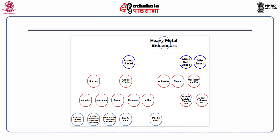Biosensors for heavy metals can be characterized depending upon the biocomponent employed. According to this categorization, we can classify them into three classes: protein based, whole cell based, or DNA based. Protein-based heavy metal biosensors can further be divided into enzyme based, purified protein based, or antibody based. Antibody-based biosensors generally include monoclonal antibodies. For enzyme-based biosensors, either inhibition or activation of enzyme activity is used. Purified proteins include fusion proteins or regulatory proteins. Examples of each category are shown in the slide.